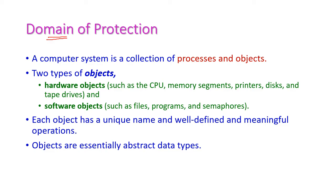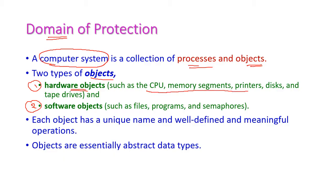We will also see the association between process and domain and the types of domains. In domain of protection, our computer system is a collection of processes and objects. First let us see objects — we have two types: hardware objects and software objects. Hardware objects include CPU, memory segments, printers, disc and tape drives, and all physical components.